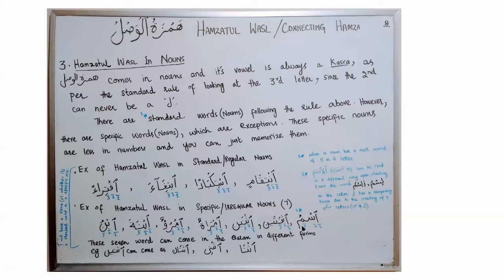But there are some exceptions for Hamzat al-Wassl in specific or irregular nouns. The best way is to memorize these few words — whenever you see them, remember to start Hamzat al-Wassl with Kasra. These seven words can come in the Qur'an in different forms. Memorize these seven words so that whenever you have to start from Hamzat al-Wassl in them, you always put Kasra under Hamzat al-Wassl. For standard nouns, follow the general rule; for specific nouns, memorize these seven words. Although they come in different forms in the Qur'an, whenever you have to start from Hamzat al-Wassl, always put Kasra.